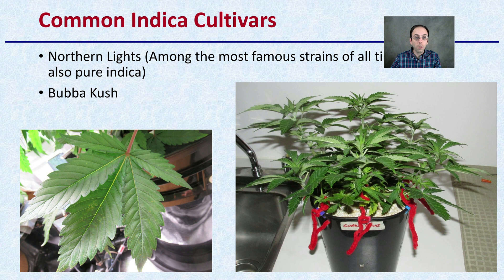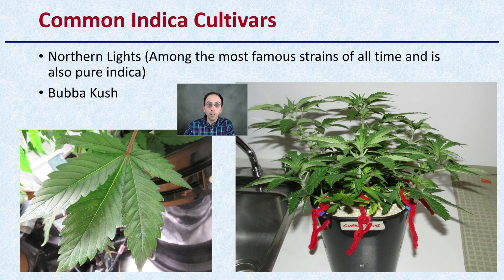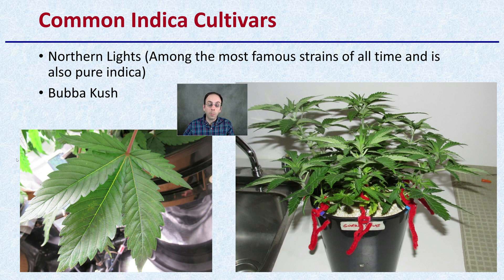In general, there are many indica cultivars that exist. Northern Lights is among the most famous strains of all time and is also a pure indica. Bubba Kush is another example. All of these have that shorter plant morphology, and if you look at one of the leaves, it's going to have that short and wider appearance — giving you some idea of what morphologically defines a cannabis indica plant.